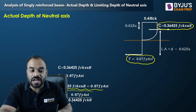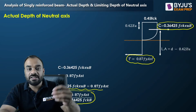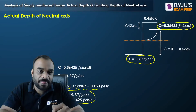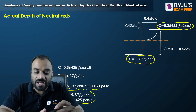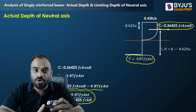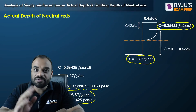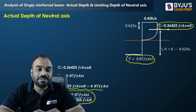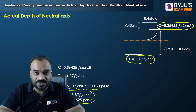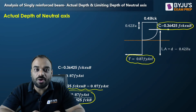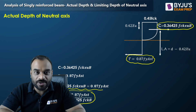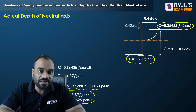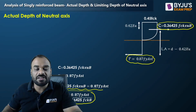This gives us the actual depth of neutral axis in the given cross section. After determining both the limiting and actual depths of neutral axis, we need to identify which type of section it is — under-reinforced, over-reinforced, or limiting — which will be covered in the next session. I hope you have understood everything discussed today. See you in the next session. Bye bye, take care and thank you.